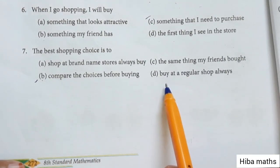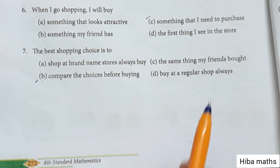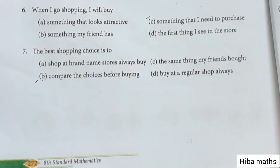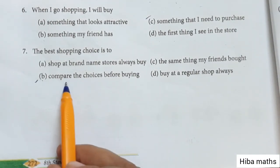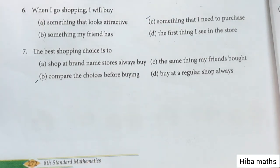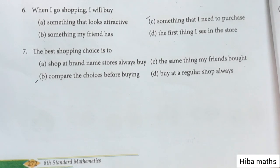We are going to compare choices before buying. If a friend is going to buy a brand, what we are going to do is compare the choices before buying. For example, if you are going to buy a chocolate for 5 rupees but you can get it for 4 rupees, maybe you can save 1 rupee. So always compare between the shops.